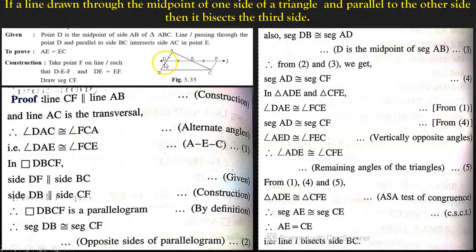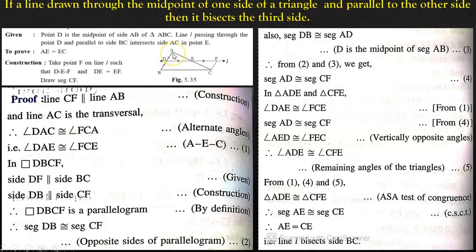Segment DB is congruent to segment CF because opposite sides of a parallelogram are congruent — this is statement 2. Also, DB is congruent to AD — this is statement 3. From statements 2 and 3, segment AD is congruent to segment CF — statement 4. Now in triangle ADE and triangle CFE: angle DAE is congruent to angle FCE from statement 1, and segment AD is congruent to segment CF from statement 4.